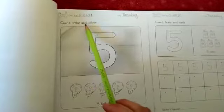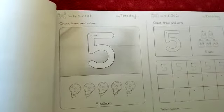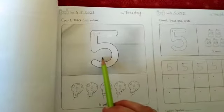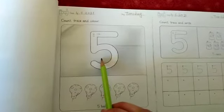Count, trace and color. We are learning today number 5. Which number is this? 5. Which number is this? 5 number.